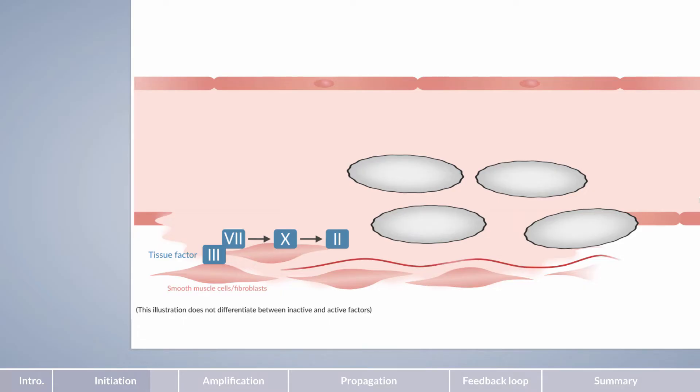Factors III, VII, X, and II are present on the surface of smooth muscle cells and fibroblasts. The question that arises at this stage is how can coagulation shift from the surface of these cells to the surface of platelets?